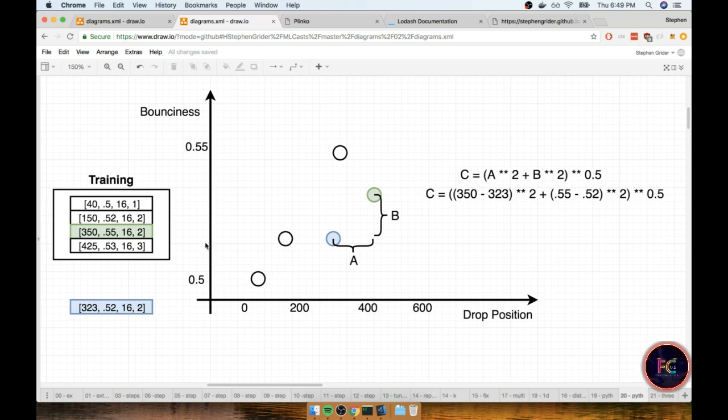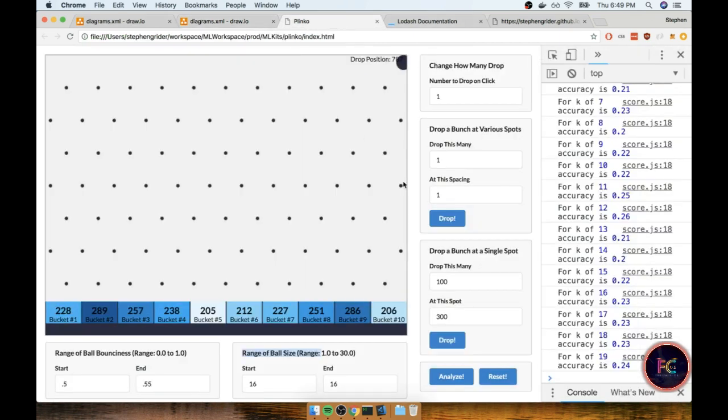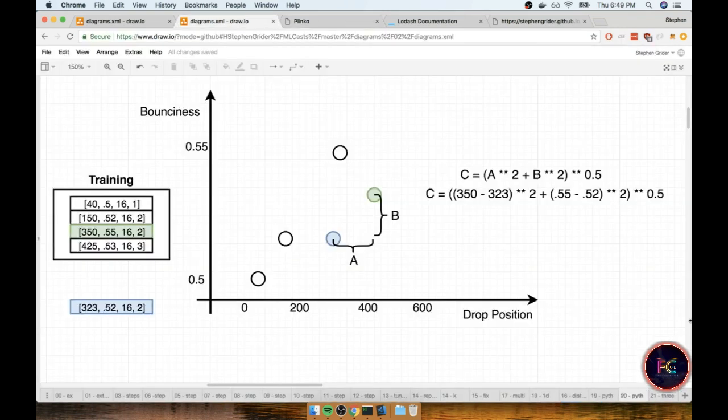Now one thing that you might be very much aware of is that in our application we actually have three separate features. We have our drop position, we've got the ball bounciness, and we've got that ball size. And we probably care about all three features. So how does this equation change when we have three features?